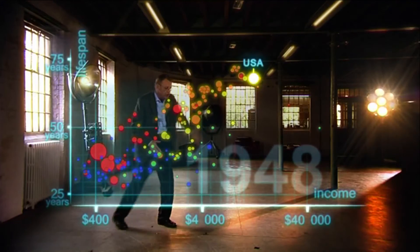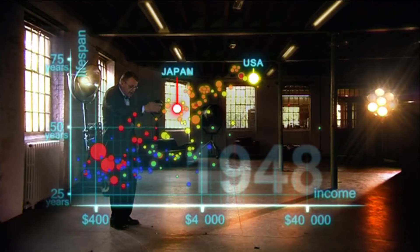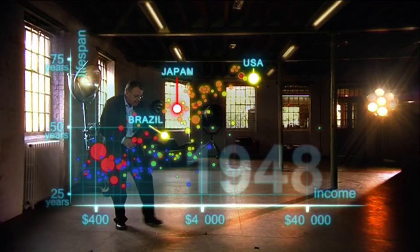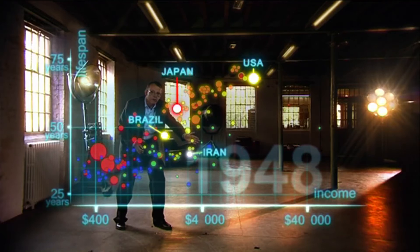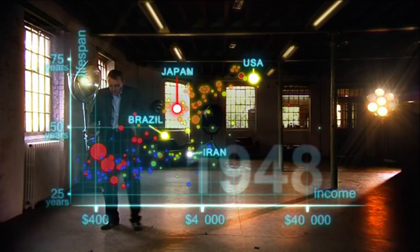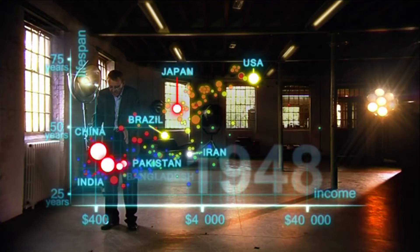United States was in the front. Japan was catching up. Brazil was way behind. Iran was getting a little richer from oil, but still had short lives. And the Asian giants, China, India, Pakistan, Bangladesh and Indonesia, they were still poor and sick down here.